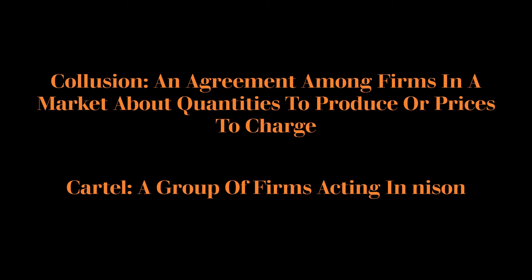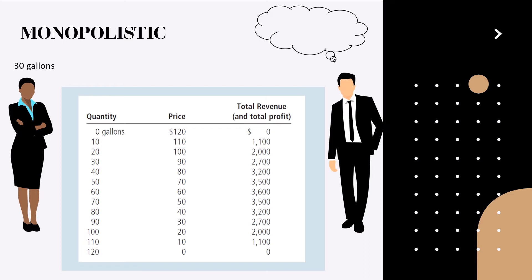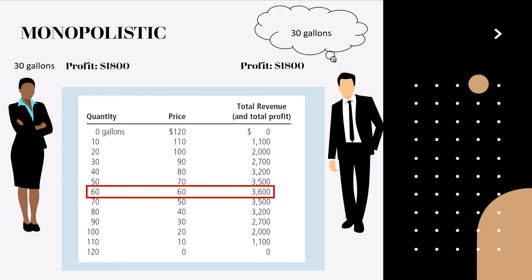So let us try to understand what can happen in a duopoly if the companies cannot explicitly agree on production quantity. Let's say we have Jack and Ann, and we have the same demand schedule as before. Let's say Jack has information that Ann is going to produce 30 gallons. Jack's first idea is to produce another 30 gallons — in that case total production will be 60 gallons, the price will be 60 dollars per gallon, and the total profit will be 3,600 dollars divided by 2.